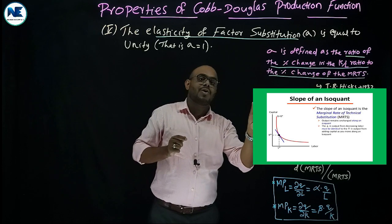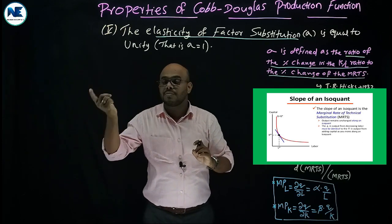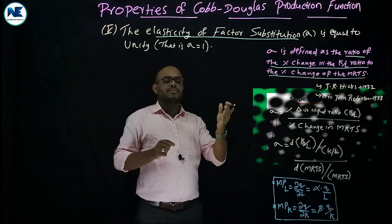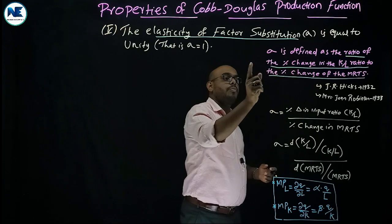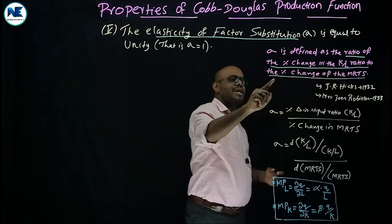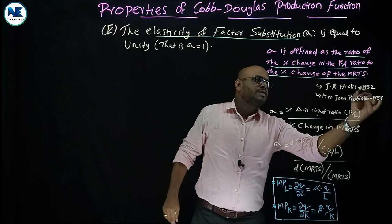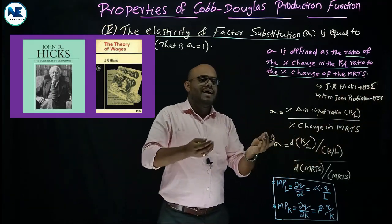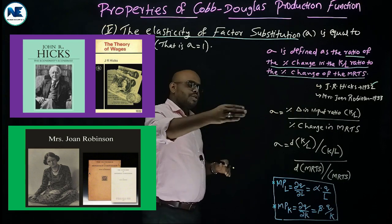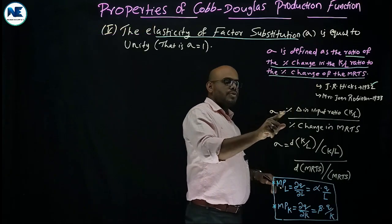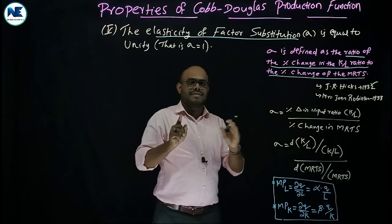The MRTS is the slope of the isoquant. On an indifference curve, the slope gives the marginal rate of substitution; on a production possibility curve, it gives the marginal rate of transformation. The elasticity of factor substitution was first developed by J.R. Hicks in 1932 and later refined by Mrs. Joan Robinson in 1933. The formula is: σ = (proportionate change in input ratio K/L) divided by (proportionate change in MRTS).